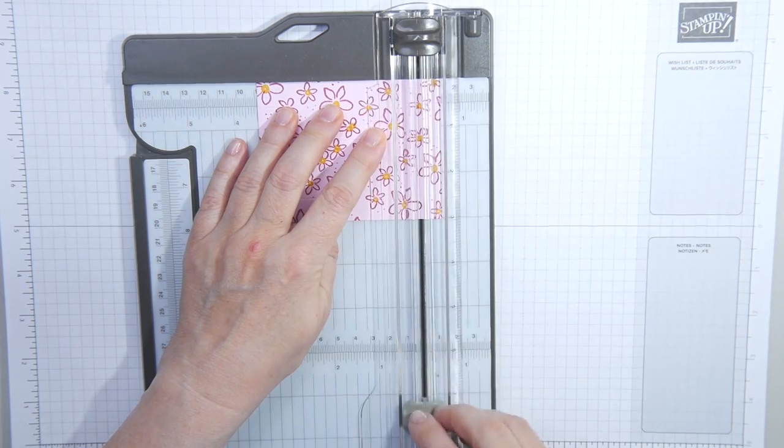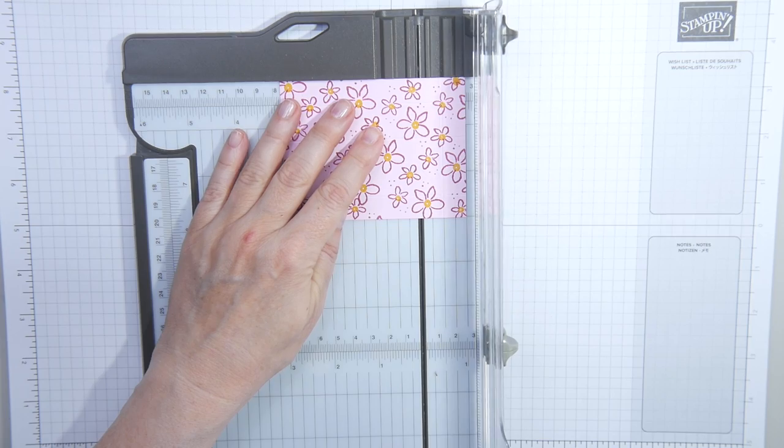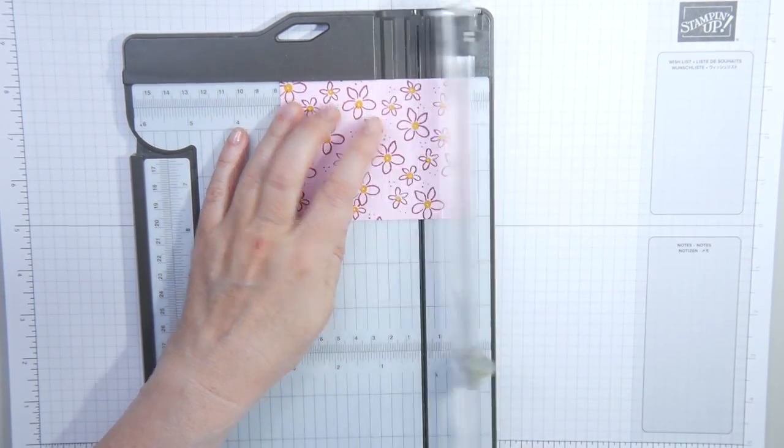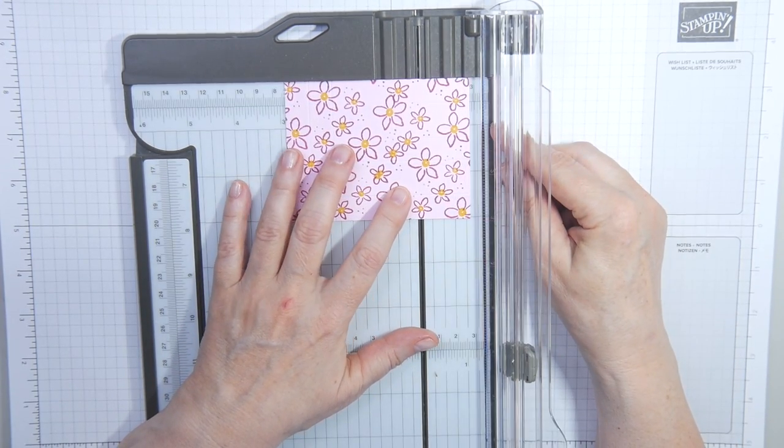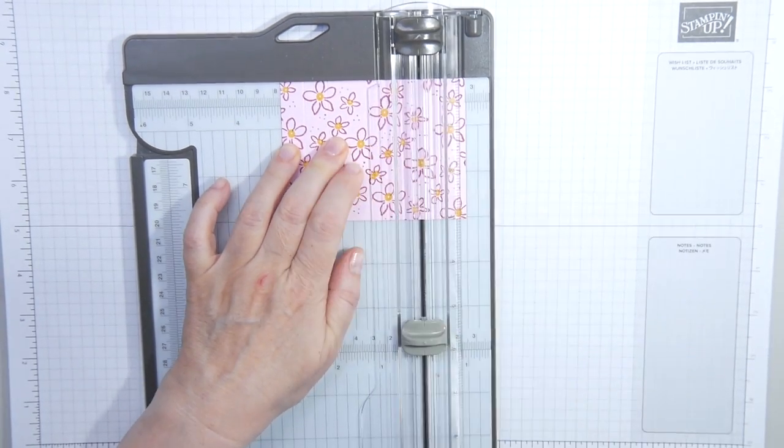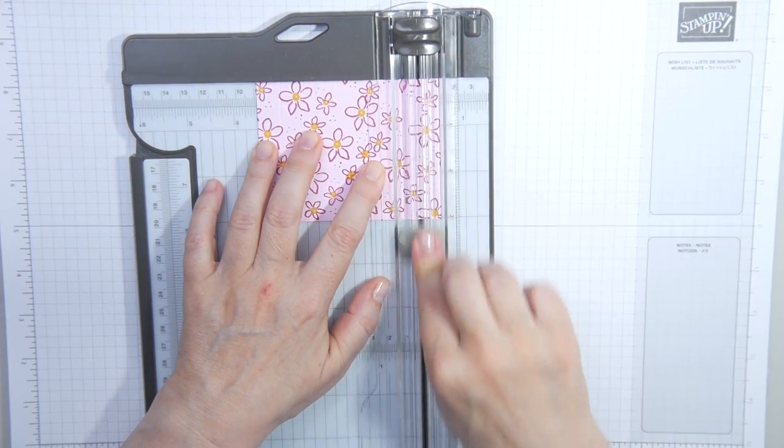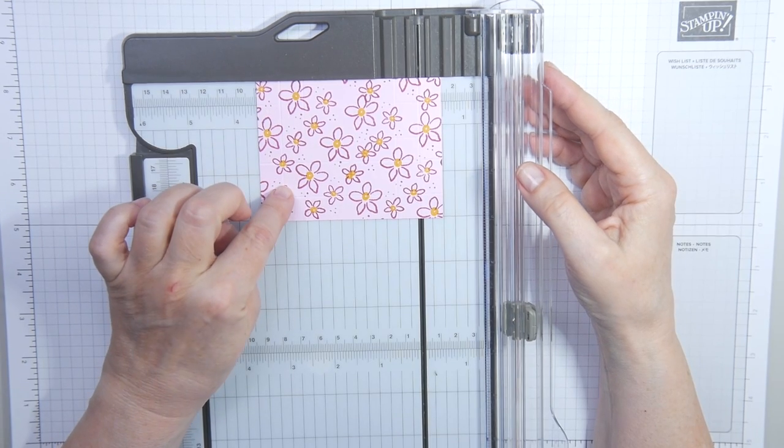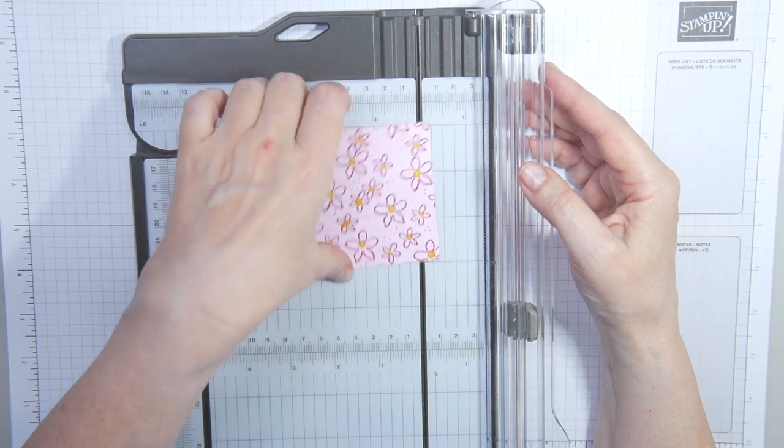In centimeters, that is 1.2, 3.1, 4.3 and 6.2 centimeters. Then with the four inch side top, the 9.9 centimeter side top, you score at half an inch and at one inch. Then you go to three inches and three and a half inches. And in centimeters, that is 1.2, 2.4, 5 and 6.2 centimeters.